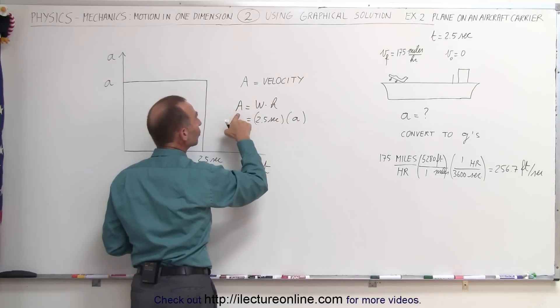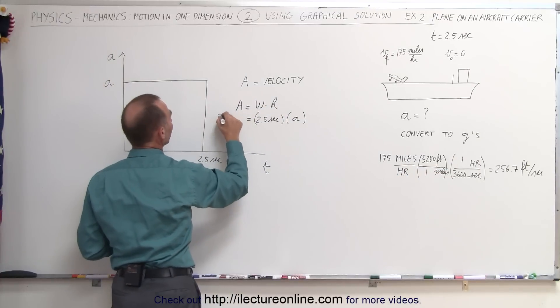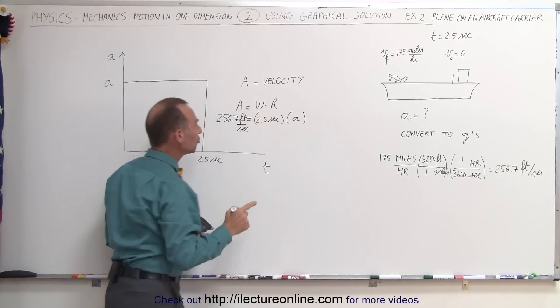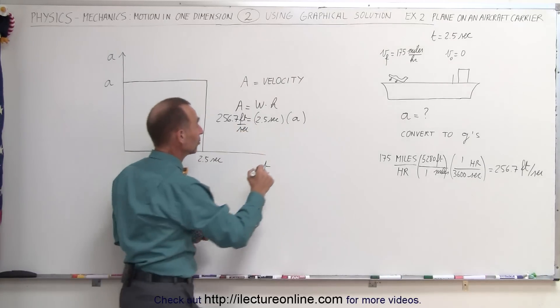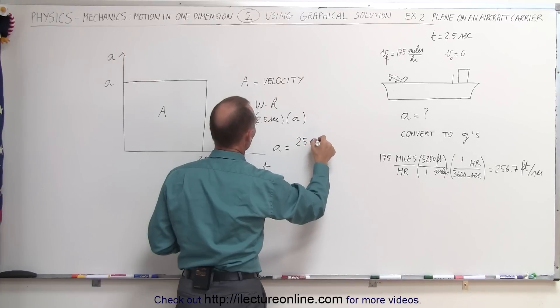And the height would be equal to the acceleration that we're looking for. And the area is equal to the velocity that we reach, which we know is 256.7 feet per second.